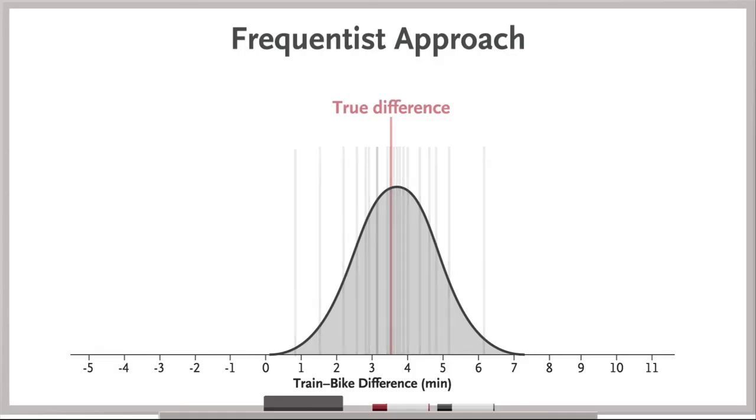The difference you find in your data is your estimate of the true difference, the population parameter, but your data also tell you something about the distribution of estimates you would likely get if you did repeat the trial many times.